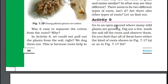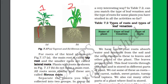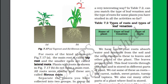Go to an open ground with elder supervision where many wild plants are growing. Dig out a few, wash the soil off the roots, and observe them. Do you find all of them have these two kinds of roots? In the first example, the main root is called tap root and the smaller roots are called lateral roots.